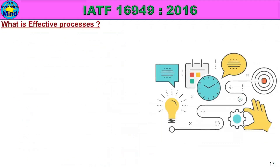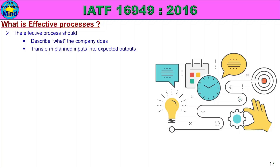Now, what is an effective process? An effective process should: first, describe what the company does; second, transform planned inputs into expected outputs; third, have KPIs with goals to determine effectiveness.